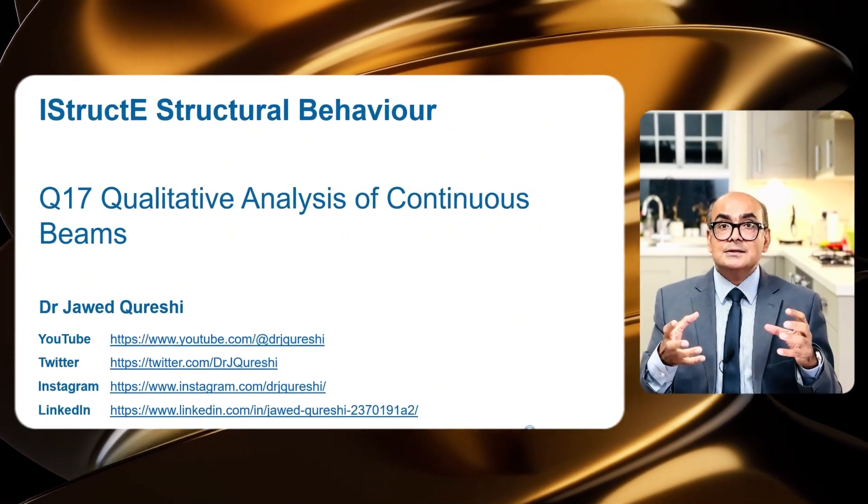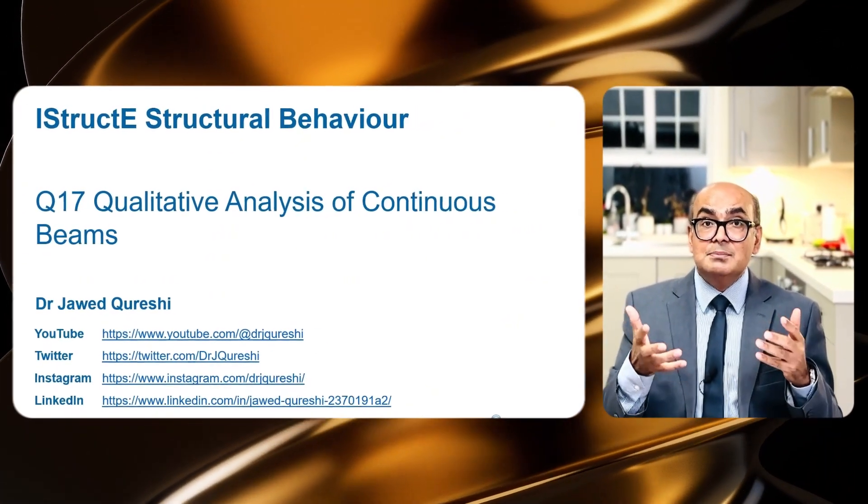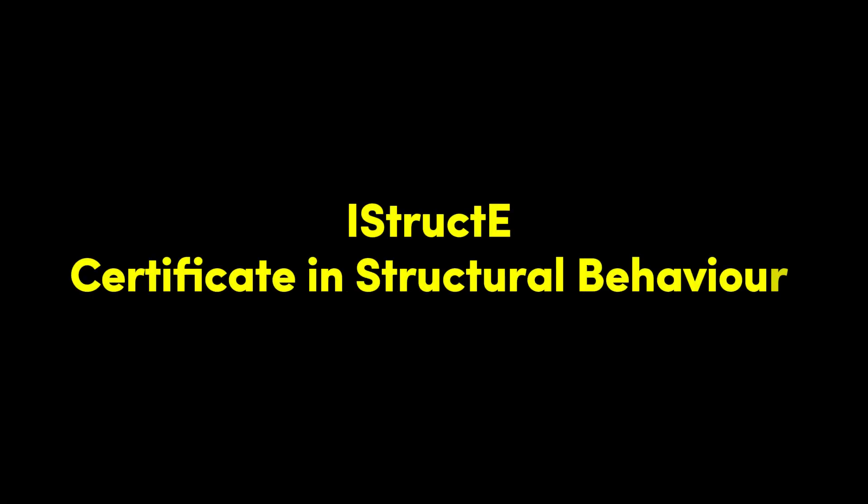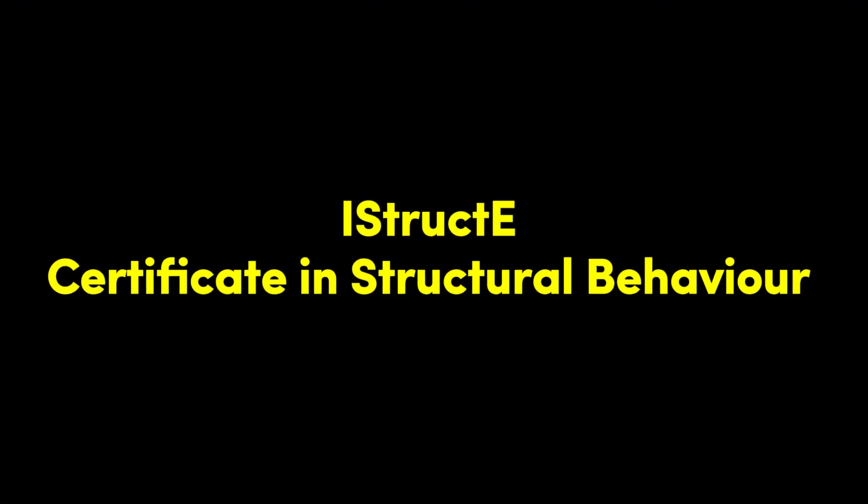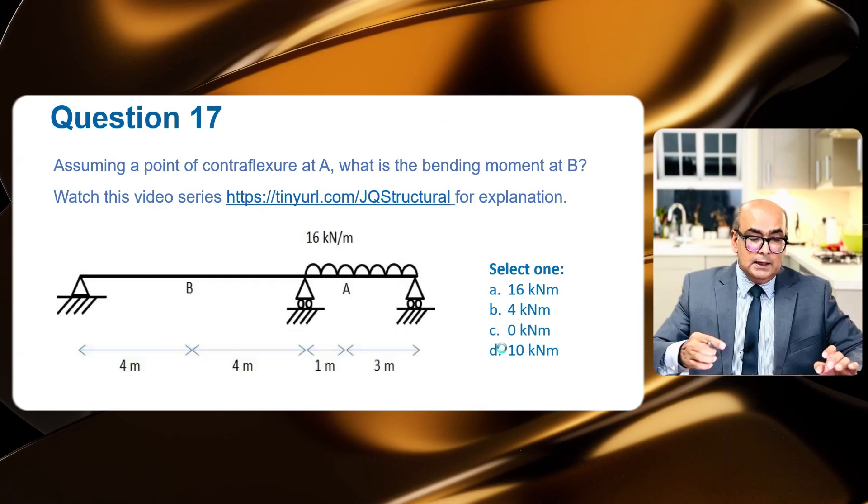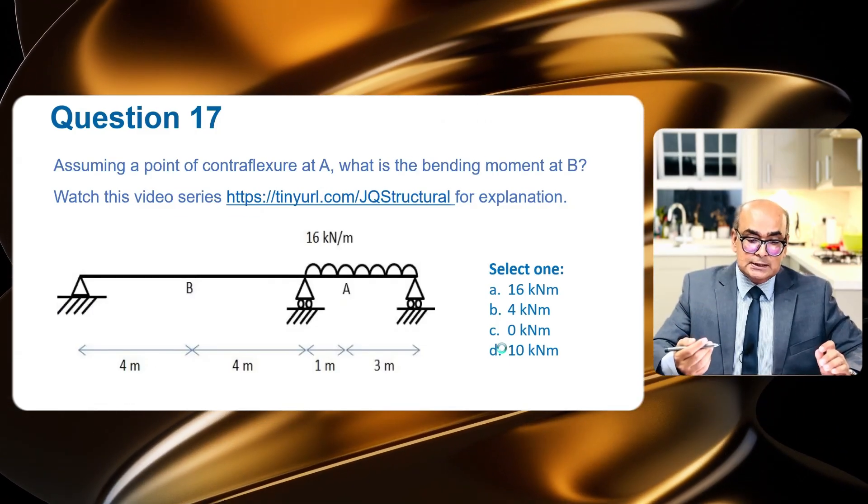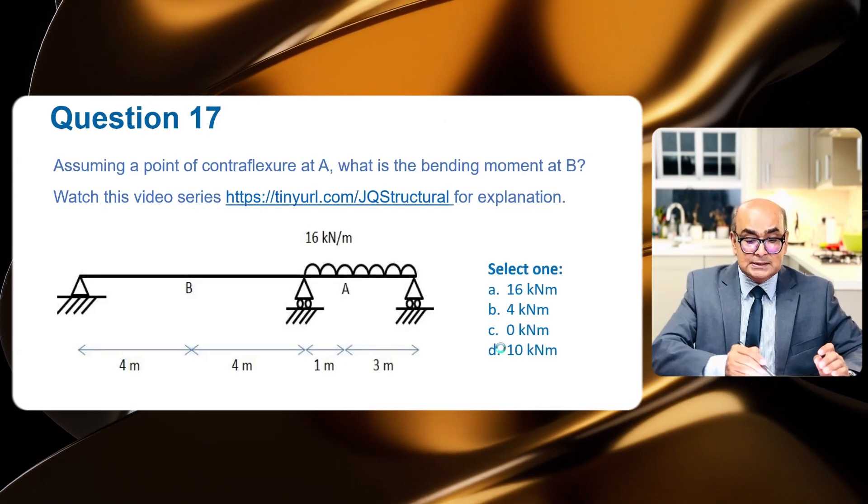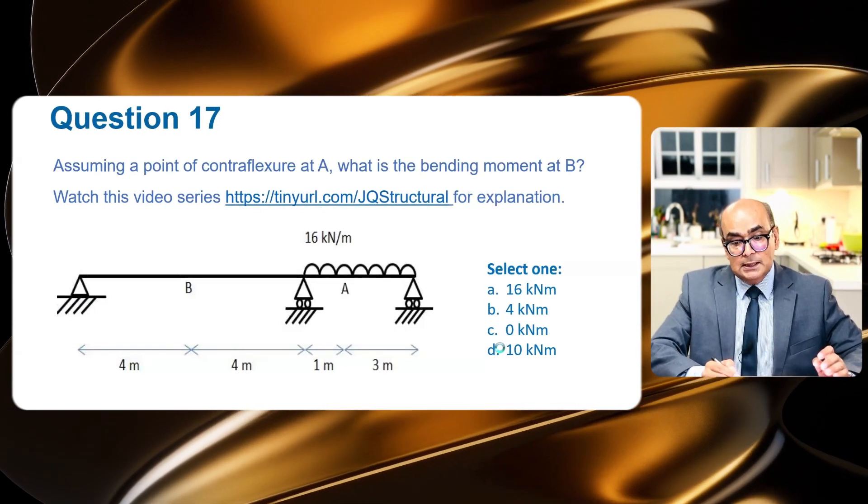This is part 17 of my lecture series on understanding structural behavior for iStructE structural behavior certificate course. Let's dive into the example. Assuming a point of contraflexure at A, what is the bending moment at B? This is a continuous beam.